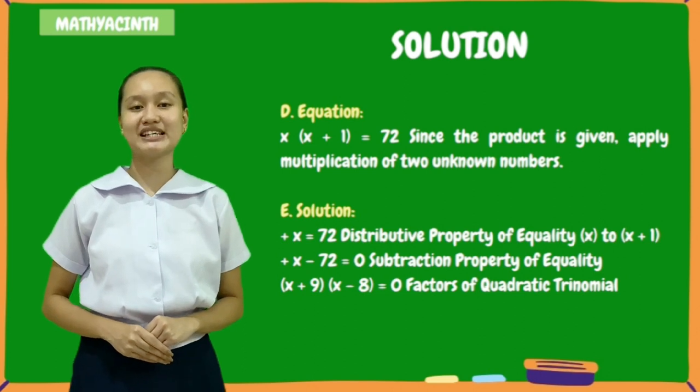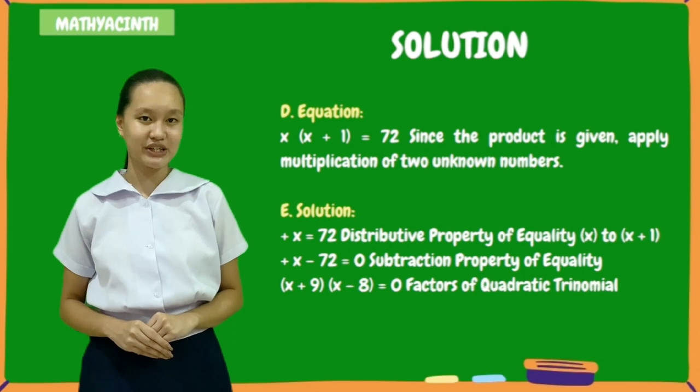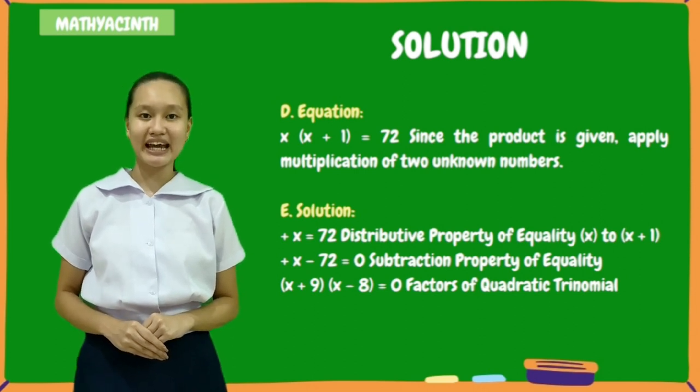Letter E. Solution. X squared plus x equals 72. X squared plus x minus 72 equals 0. The quantity x plus 9 times the quantity x minus 8 equals 0.